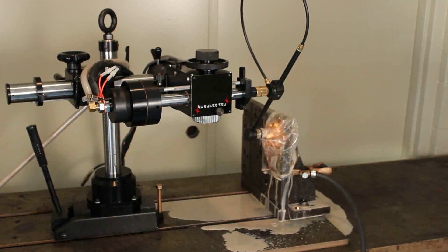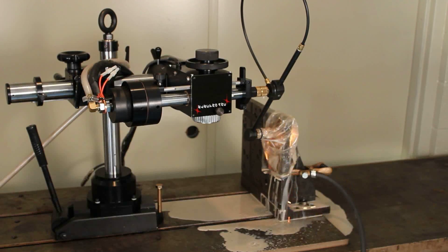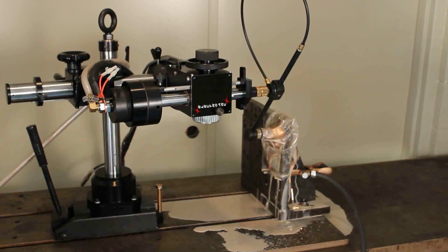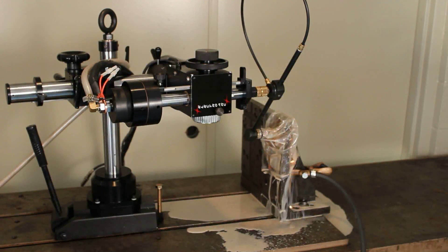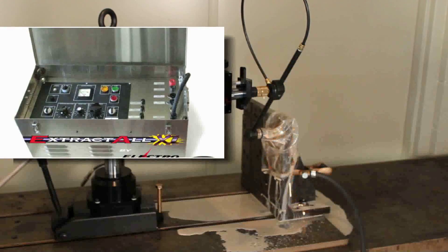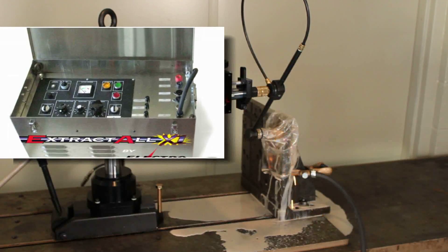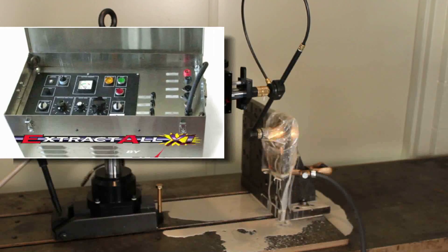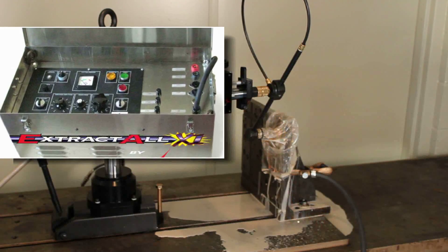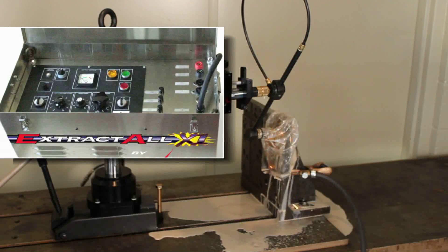The ExtractAll can take out taps from number 2 to 3 1/4 inch in a single pass. It can disintegrate high-speed steel and carbide tooling quickly and efficiently. The ExtractAll X1 power supply and control panel comes in a 16 gauge stainless steel case that can pass through an 18 by 20 inch opening.